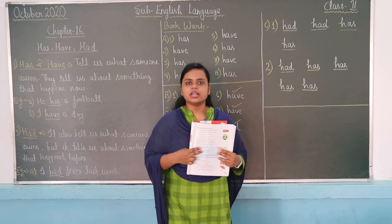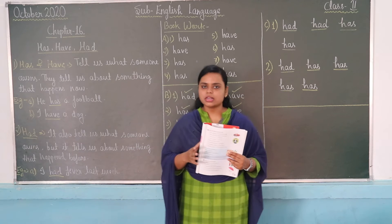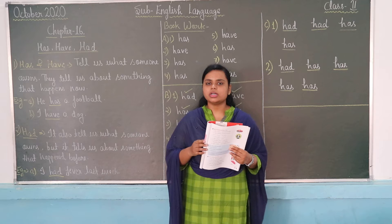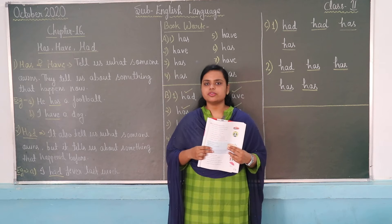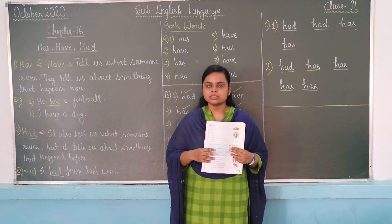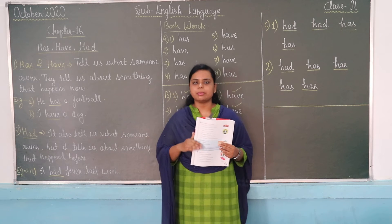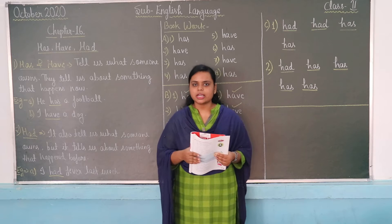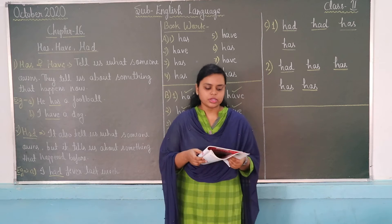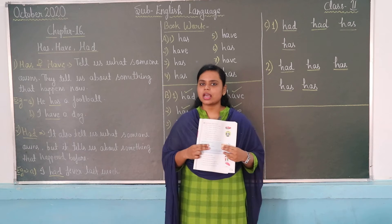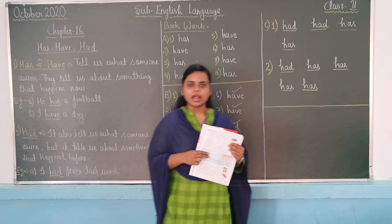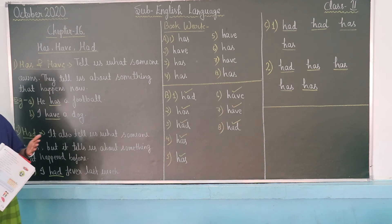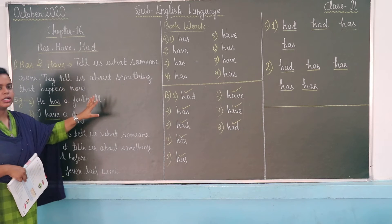Has, Have and Had. First of all, Has and Have — there are two words. Has and Have we use for the present tense, meaning the things happening in the present time. In sentences we use Has and Have for present tense, and Had we use for the past tense — the things we have already done. We will use Had for that.